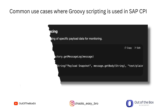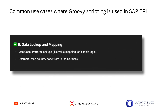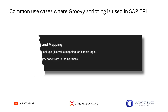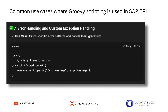Sixth, data mapping and lookups. If you want to replace static values with dynamic logic, you can use Groovy scripting — for example to translate currency codes or product IDs, or to use a custom if-else structure to look up a target server using APIs.